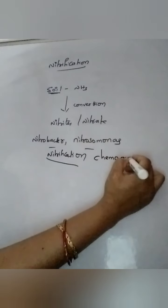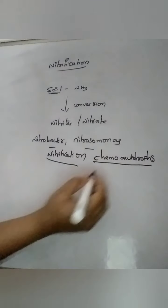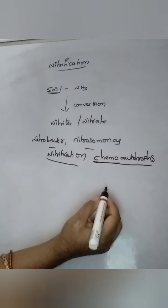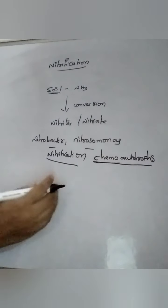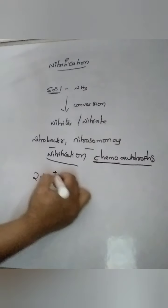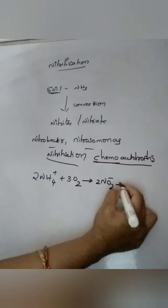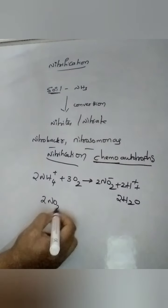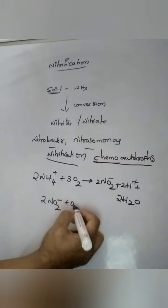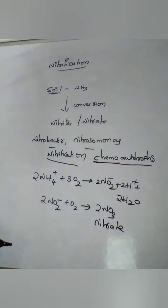Chemoautotrophs synthesize their own food material but do not use sunlight; they obtain energy from inorganic molecules. In the nitrification reaction, ammonium or ammonia combines with oxygen to form nitrite first, along with protons and water. Then this nitrite is further converted into nitrate form. This is the nitrification reaction.